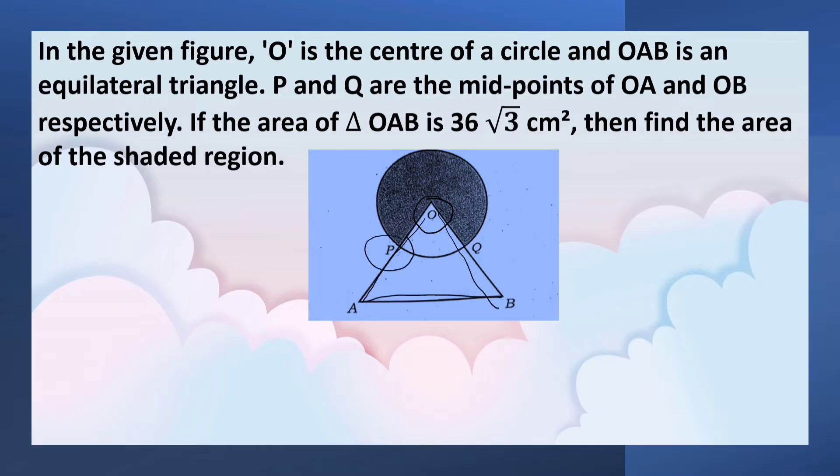P and Q are the midpoints of OA and OB respectively. If the area of the triangle OAB is 36 root 3 cm square, then find the area of the shaded region.